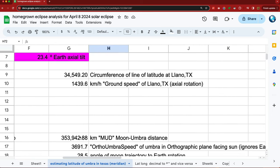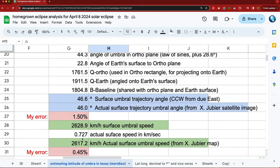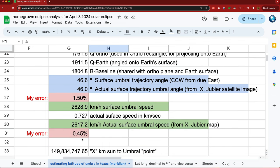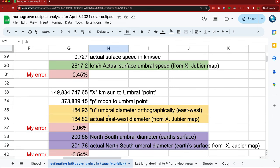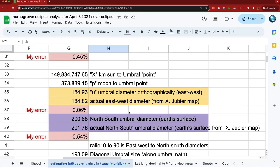I then worked on the trajectory angle for the surface as the umbra is traveling across the surface, along with the surface speed in kilometers per hour. And I measured the umbra diameter, east-west and north-south.